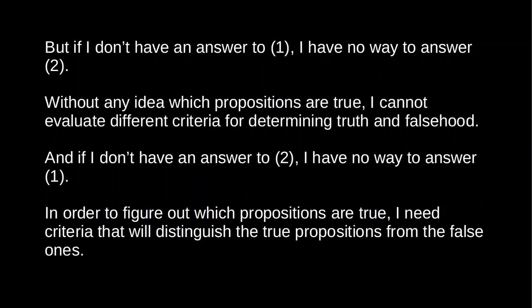So it looks like there's just no way for any inquiry to even get started. Andrew Kling, in his article 'Posing the Problem of the Criterion', summarises the difficulty this way: "Short of lucky guessing, it seems that the only way to have good beliefs is to employ a criterion of truth whose goodness is somehow settled independently of the beliefs it warrants to be true. Yet it also seems that, again short of lucky guessing, in order to have a good criterion of truth, we must select from among alleged criteria of truth on the basis of independently good beliefs." So that's the general problem of the criterion.